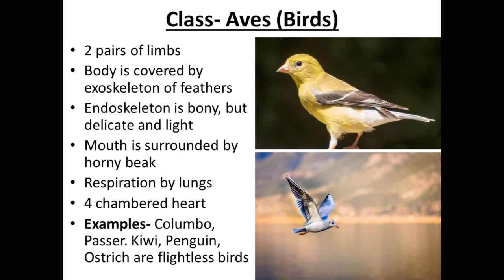Class Aves includes all birds. They have two pairs of limbs. The body is covered by an exoskeleton of feathers. The endoskeleton is bony but very lightweight, which enables birds to fly. The mouth is surrounded by a horny beak used for feeding. Respiration is by lungs and they have a four-chambered heart. Examples: pigeon (Columba), sparrow (Passer), kiwi, penguin, ostrich. Kiwi, penguin, and ostrich are flightless birds — they are birds but cannot fly.